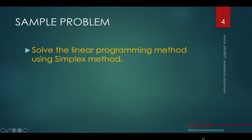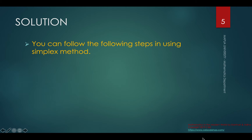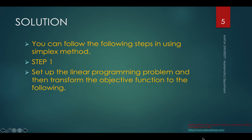We will solve the linear programming problem using the simplex method. We want to maximize z, which is equal to 36x plus 24y, subject to the following constraints. We set up the linear programming problem and then transform the objective function by transposing 36x and 24y to the left-hand side to obtain: negative 36x minus 24y plus z equals 0.